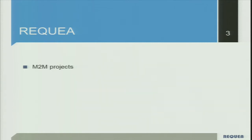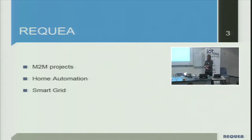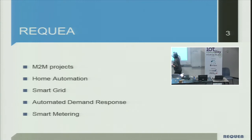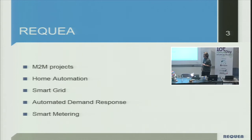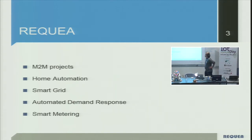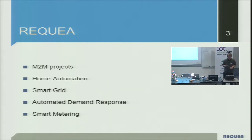The projects we've been involved in are M2M, especially in home automation and smart grid — smart grid especially for automated demand response in the energy market and smart metering. Projects range from small prototypes to large deployments, like working with Veolia for monitoring a network of 1.5 million meters in France. These are real production projects and quite heavy.